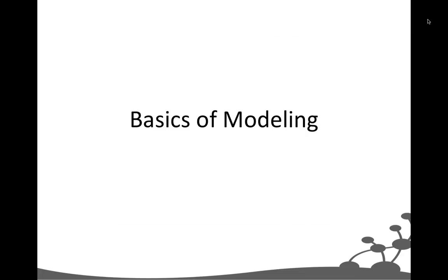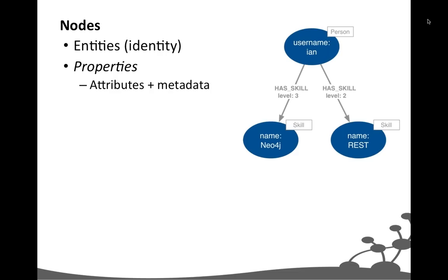So let's talk briefly about some of the basics of data modeling. With Neo4j you have four graph primitives: nodes, relationships, properties, and labels. The questions are: when do I use a node, when do I use a relationship? I tend to use nodes to model entities — things in your domain that have identity. There might be physical things like people and products, or concepts, expressions, or calculations. Anything in your domain that has identity I'll tend to model as a node, and each individual instance as a separate node.